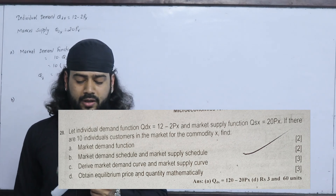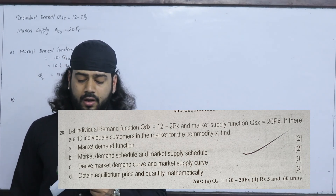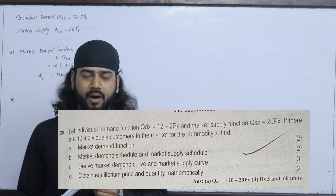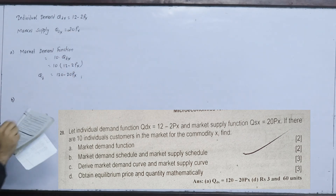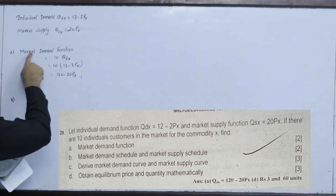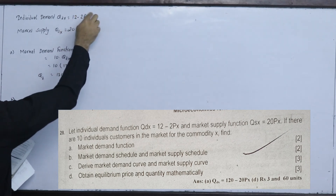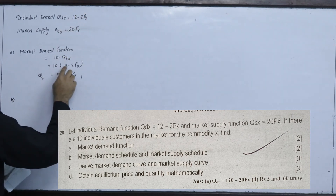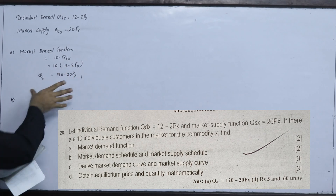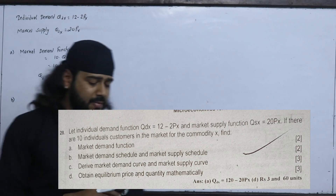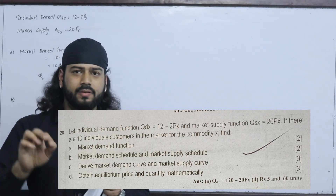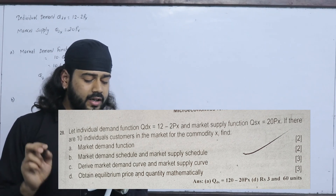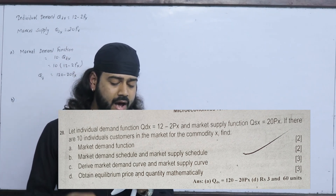If there are 10 individual customers in the market for commodity X, and individual demand is QD = 12 - 2PX, find the market demand. The total market demand is 10 times the individual demand: 10 × (12 - 2PX) = 120 - 20PX. This is the market demand function. We also set up a market demand schedule and market supply schedule.